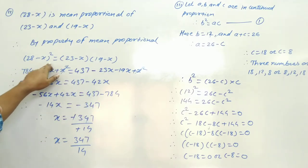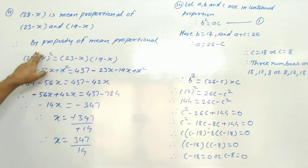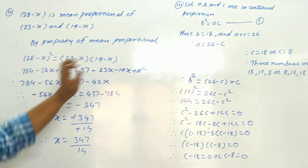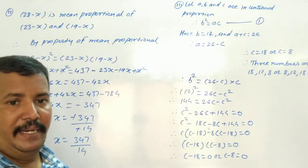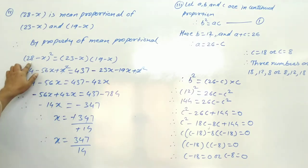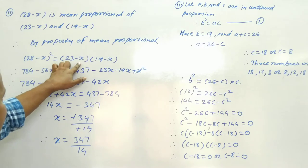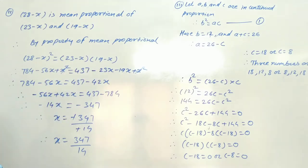By the property of mean proportional, (28 minus x) squared equals (23 minus x) into (19 minus x), because the mean proportional squared equals the product of the two extremes.